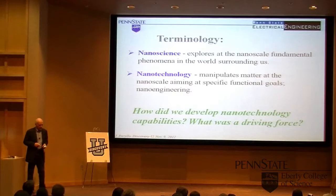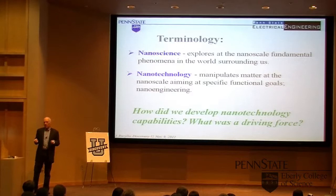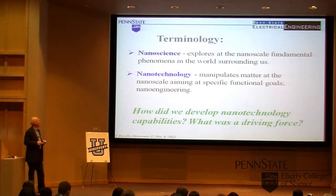I would like to distinguish between nanoscience and nanotechnology. Nanoscience, by my definition, is exploring at the nanoscale fundamental phenomena in the world around us. Nanotechnology is manipulation of matter at the nanoscale aiming at accomplishment of a specific goal. There's a significant difference because nanoscience has existed for 200 or 300 years — physicists back in the 19th century were theoretically predicting physical phenomena at the atomic and molecular level, except they didn't have the tools. Now we have developed those tools and moved into the stage we can refer to as nanotechnology.